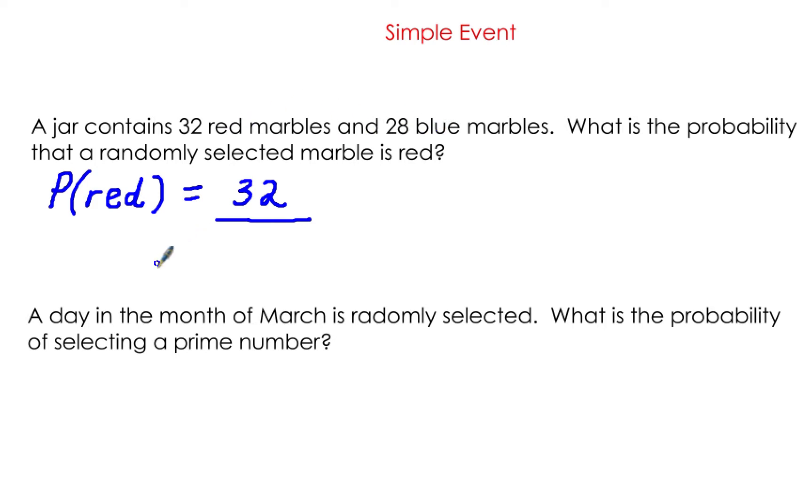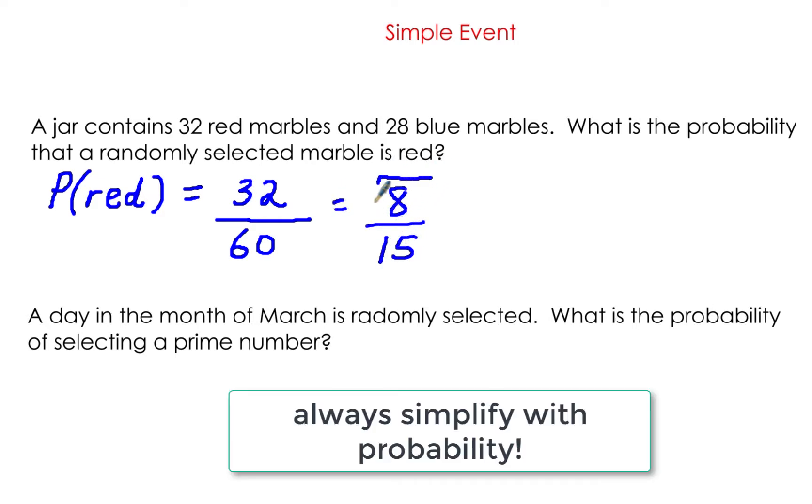The total is red plus blue: 32 plus 28 equals 60. So the probability of drawing a red is 32/60, which simplifies to 8/15.